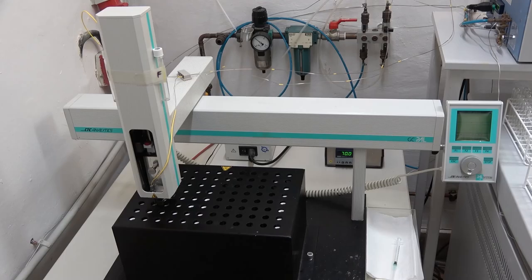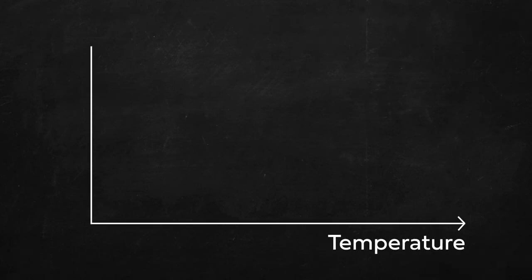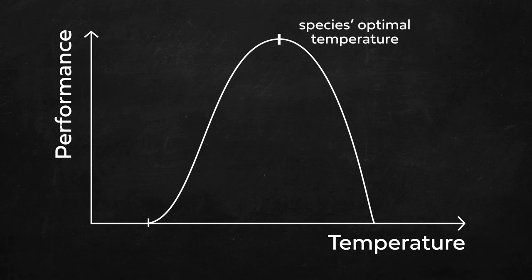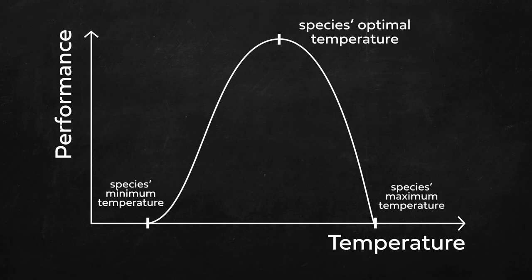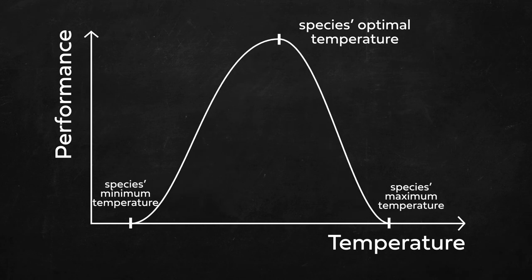Every species has an optimum temperature for growth and reproduction and a temperature range under which it can survive, called its thermal niche. This is how we visualize a species' thermal niche: on the x-axis we have temperature and on the y-axis performance — how well the species is doing. The highest point on the curve corresponds to the species' optimal temperature. The two ends where performance hits zero are the lower and upper limits at which the species can't survive. A thermal tolerance curve can be bell-shaped, with the lower limit extending a little further than the upper limit. Some specialist species have a narrower thermal niche, making them more vulnerable, or a broader tolerance making them more resilient to temperature fluctuations.